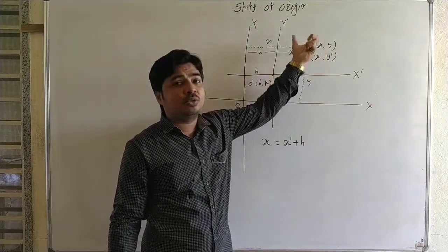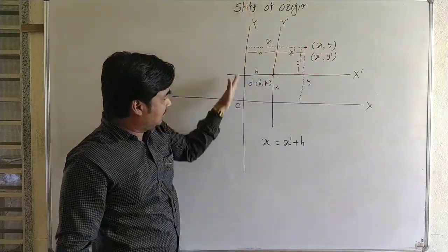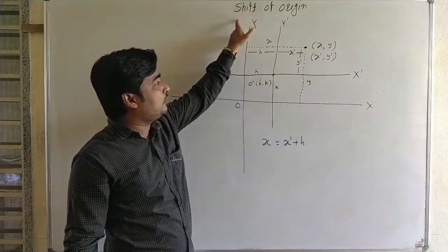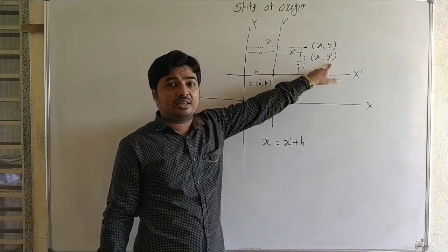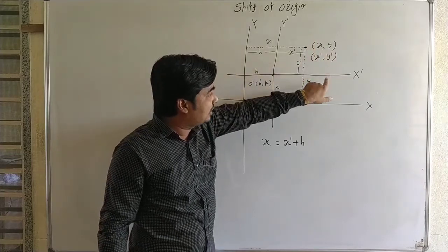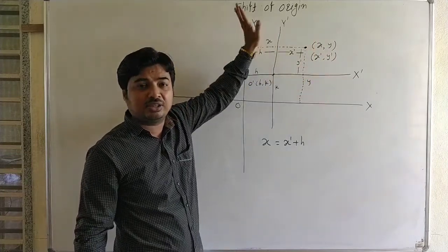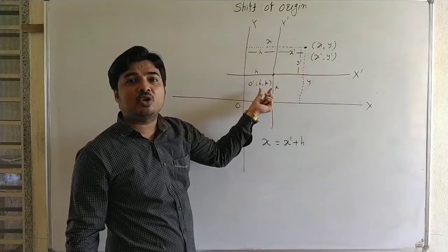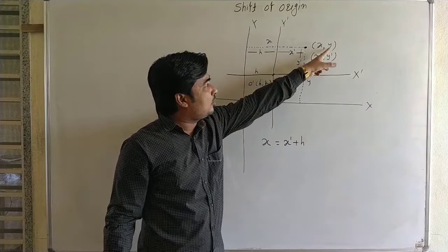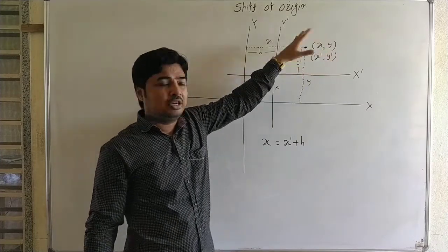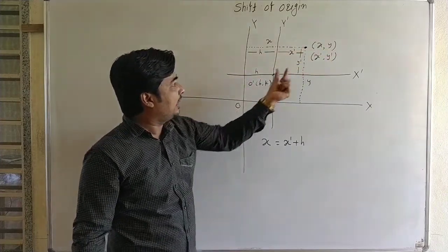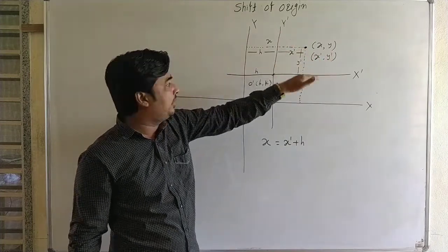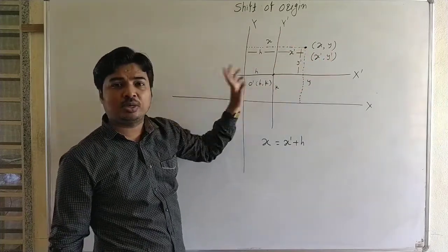x comma y are the old coordinates: x is the distance of the point from the y-axis and y is the distance from the x-axis. x-dash and y-dash are the new coordinates — distances from the new axes x-dash and y-dash. When we shift the origin to h comma k, x-dash comma y-dash are the new coordinates, and x comma y are the coordinates when the origin is at zero comma zero.